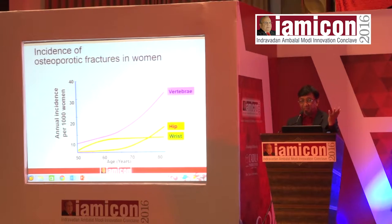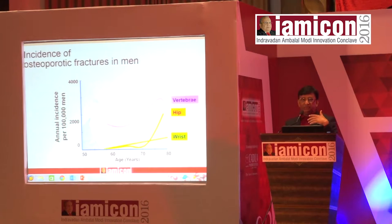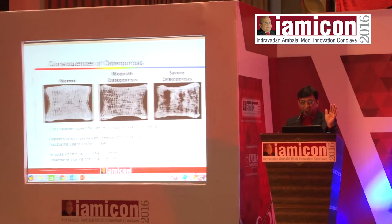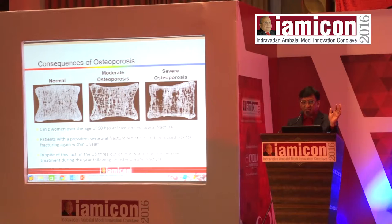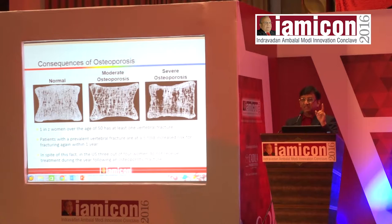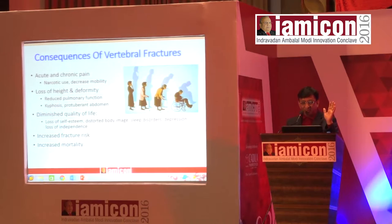Then come hip and wrist fractures. We always think osteoporosis is a woman's disease, but I have done many BMD measurements and found that males are equally involved. The patient with a prevalent vertebral fracture has a five-fold increased risk of further fracture. If you develop one fracture at age 60, the next is impending within another year, and so on, gradually progressing to hip and wrist. Simply, if you fall and your wrist fractures, that means you are osteoporotic — be careful.